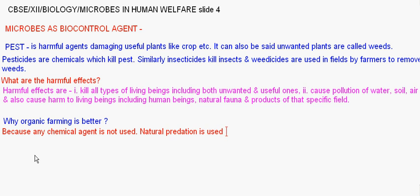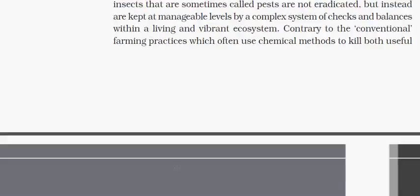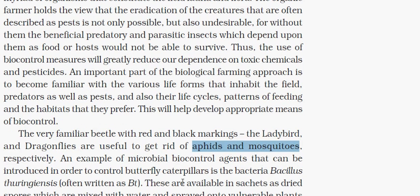For example, ladybird (a common beetle) and dragonfly are used to rid aphids and mosquitoes. Then, Bacillus thuringiensis, often called Bt, produces Bt toxin. It is available as dried spores mixed with water and sprayed on vulnerable plants like brassicas and fruit trees. It harms the larva, for example caterpillars.